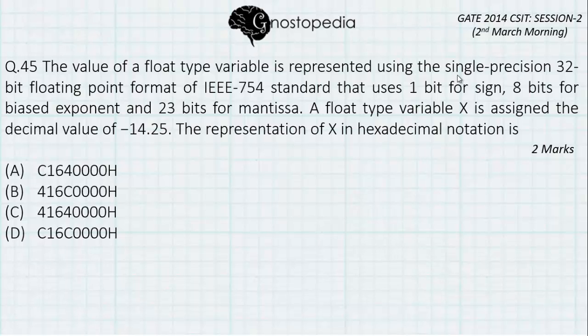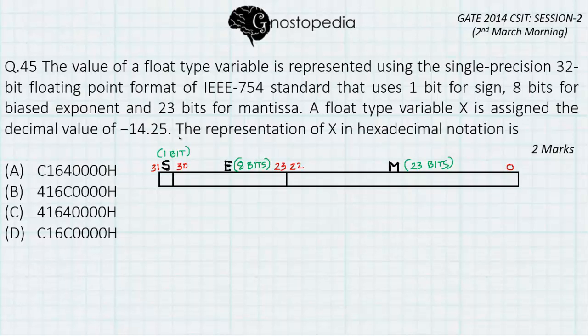So first let us look at how this representation looks like. As you can see, this is the representation given below where the size is 32 bits from 0 to bit 31, which uses 1 bit for sign. As you can see, S, that is the 31st bit, is reserved for the sign.